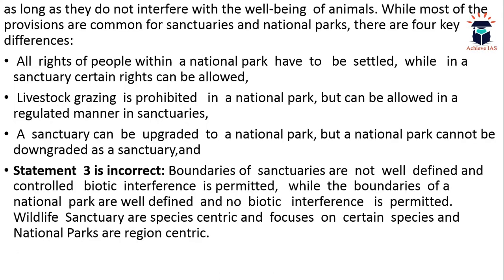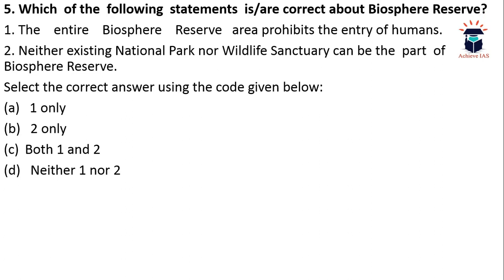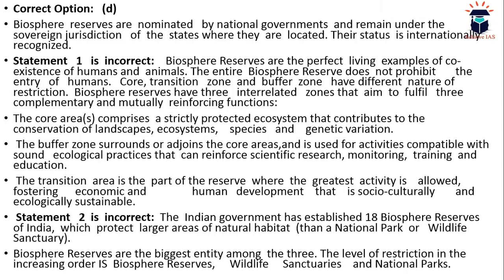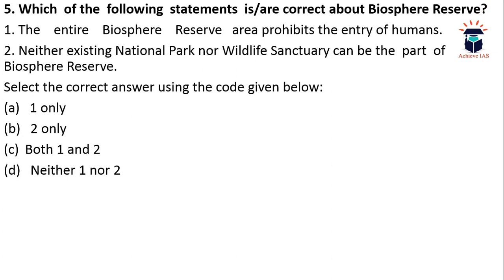Next question: which of the following statements is correct about biosphere reserves? First, the entire biosphere reserve area prohibits the entry of humans. Second, neither existing national parks nor wildlife sanctuaries can be part of a biosphere reserve. The answer is D — neither one nor two. The entire biosphere reserve area does not prohibit human entry because it has a core area, buffer area, and transition area. Many biosphere reserves are home to both national parks and wildlife sanctuaries.